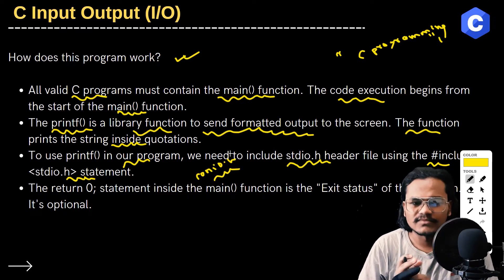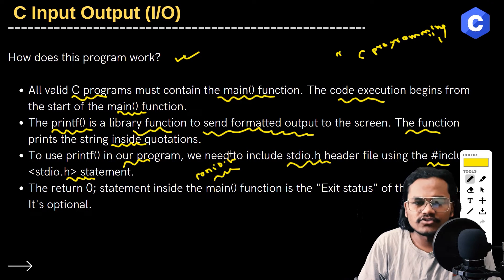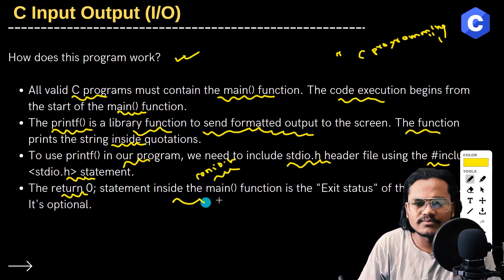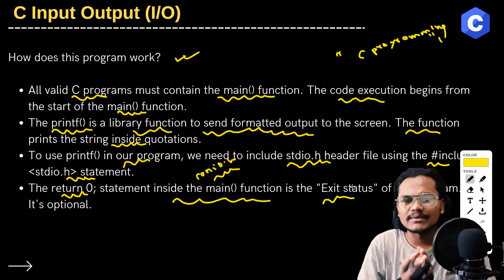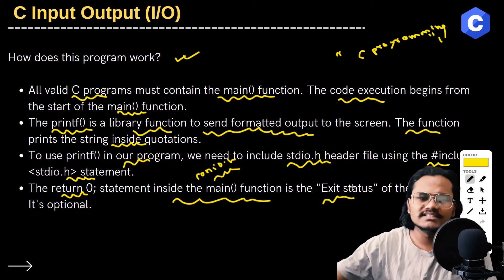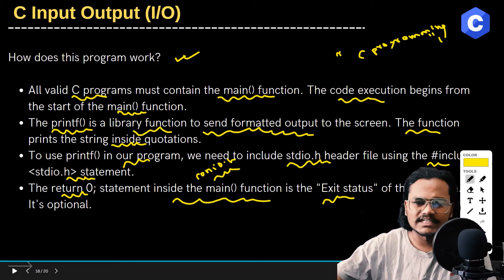The return zero statement inside the main function is the exit status of the program. This is optional.